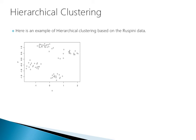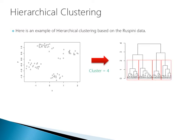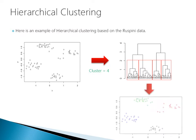Here is an example of hierarchical clustering based on the Ruspini data. Much like before, we have our Ruspini data set with four clusters. We apply our hierarchical clustering algorithm with a depth of four, and when we map these points we see the relationships are also the same as what we had with k-means. Both techniques got us to the same point, creating four clusters calibrated using our scree plot in similar ways. Two different techniques can get you to the same outcome.